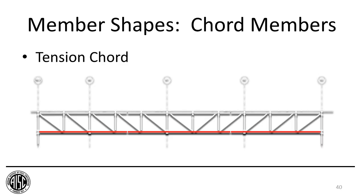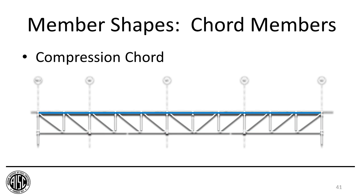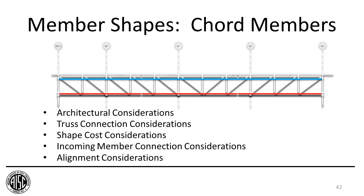For chord members — tension chord and compression chord — commonly used sections are wide flanges, HSS, and WTs. Considerations include architectural requirements, truss connection considerations, shape costs, incoming member connection considerations, and alignment considerations. We'll illustrate the last two.